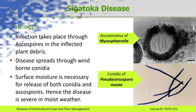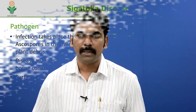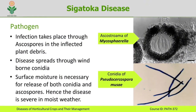Ascospores that land on a moist surface germinate and enter the leaf system through stomata. Once conditions are favorable, the pathogen produces the imperfect stage known as Pseudocercospora musae. In its asexual stage, the pathogen produces conidia which are disseminated through wind as well as rain splashes — this constitutes secondary dissemination. Surface moisture is required both for the liberation of ascospores and conidia, hence the disease is severe under moist conditions.